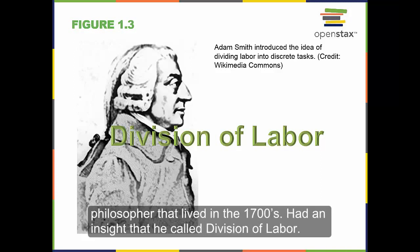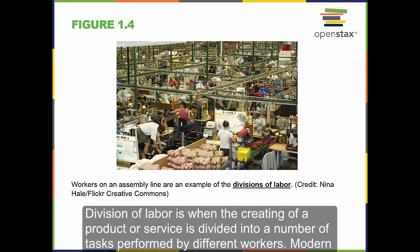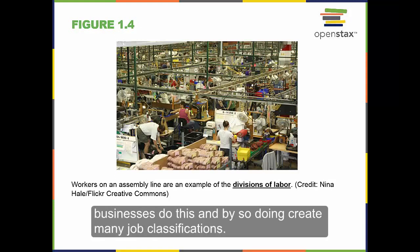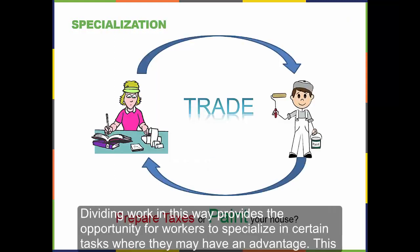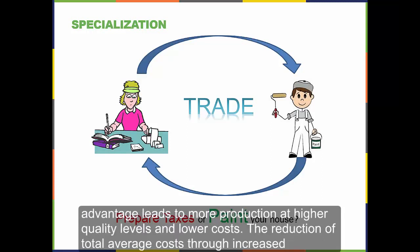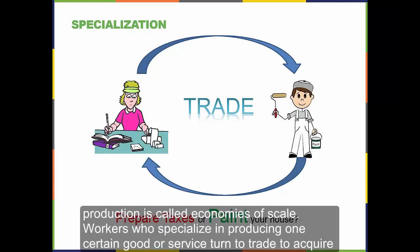Adam Smith, an economist and philosopher who lived in the 1700s, had an insight and he called it division of labor. Division of labor is when the creating of a product or service is divided into a number of tasks performed by different workers. Modern businesses do this and by so doing create many job classifications. Dividing work in this way provides the opportunity for workers to specialize in certain tasks where they can have an advantage. This advantage leads to more production at higher quality levels and lower costs.